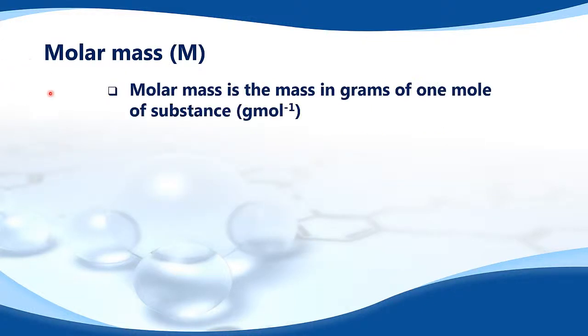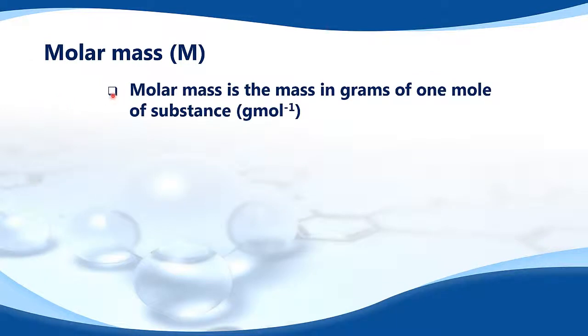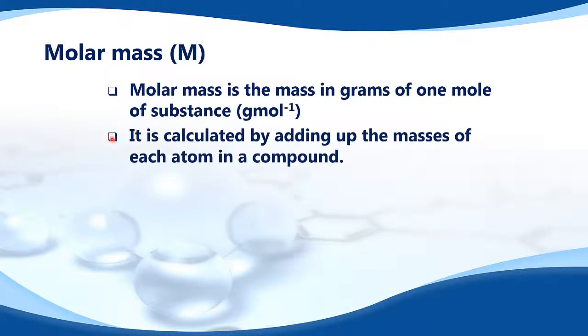Next is molar mass. Molar mass is the mass in grams of one mole of substance. The unit is grams per mole. It is calculated by adding up the masses of each atom in a compound.